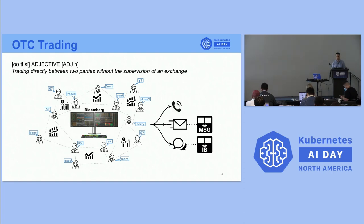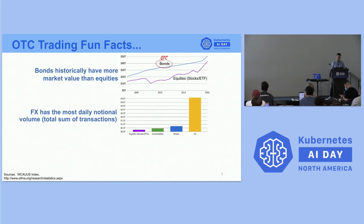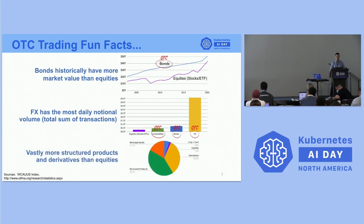It used to be in the 80s that traders would have ten phone lines and repeat the same offer over and over. It moved to emails, but quickly became a spam problem. Nowadays, they chat with each other. Some fun facts: bonds have historically been larger than equity by market value, and most bonds are traded over-the-counter. FX transactions are normally about twenty times bigger than equity trading, and also traded over-the-counter in high volumes.